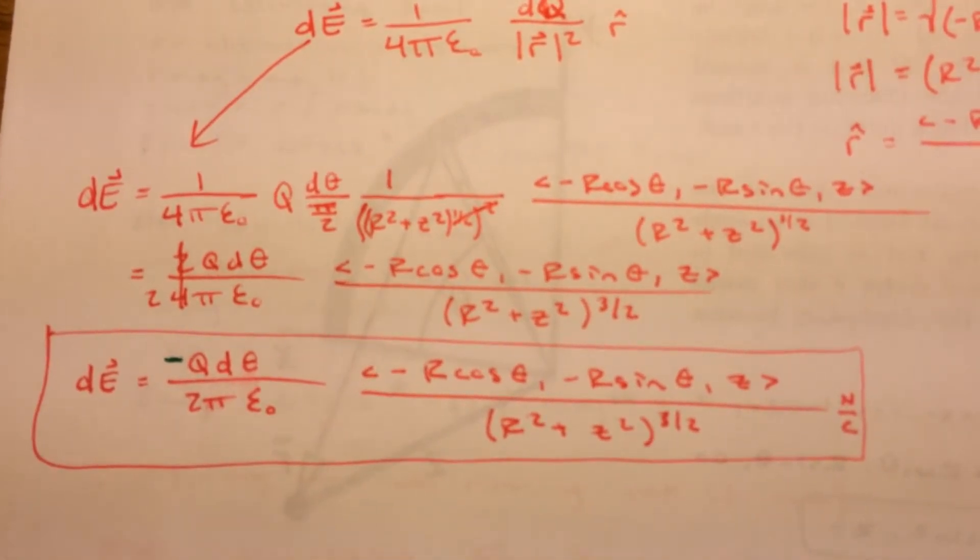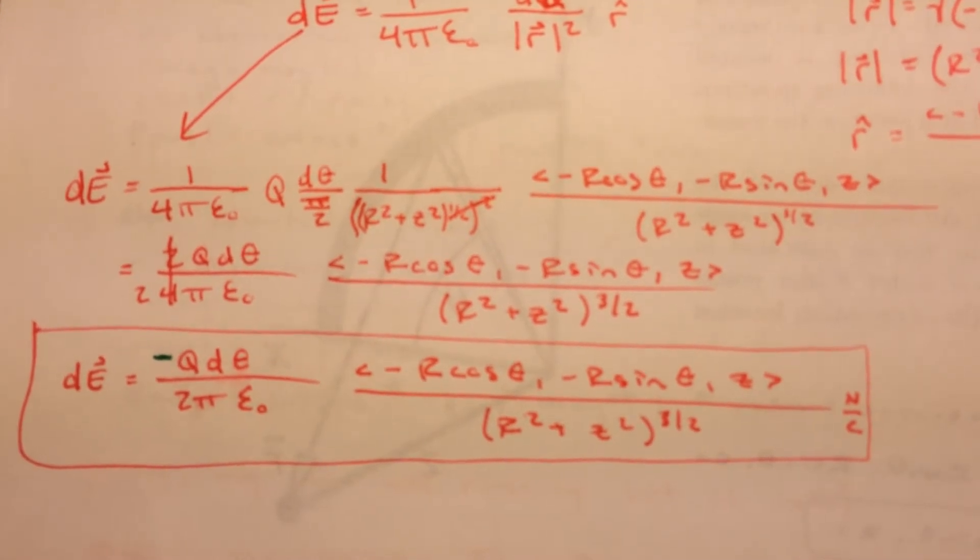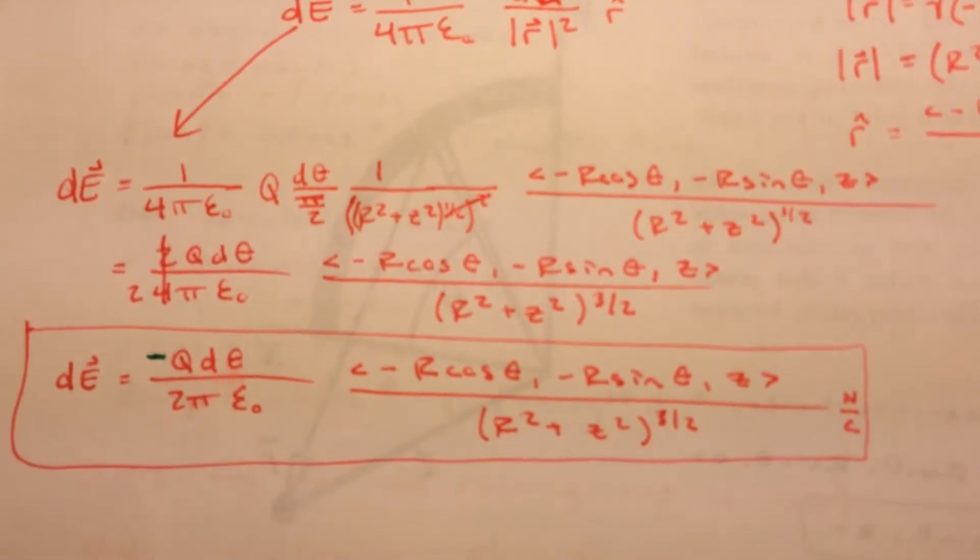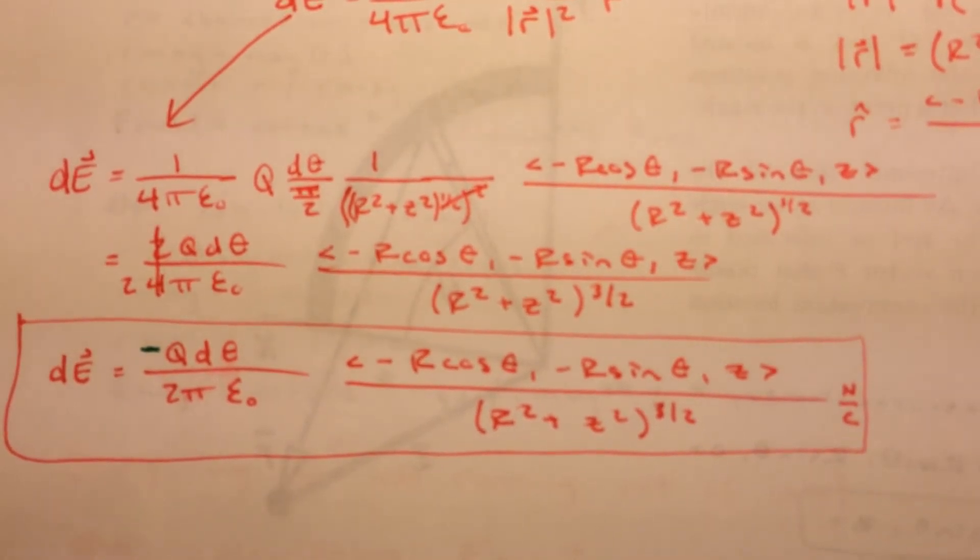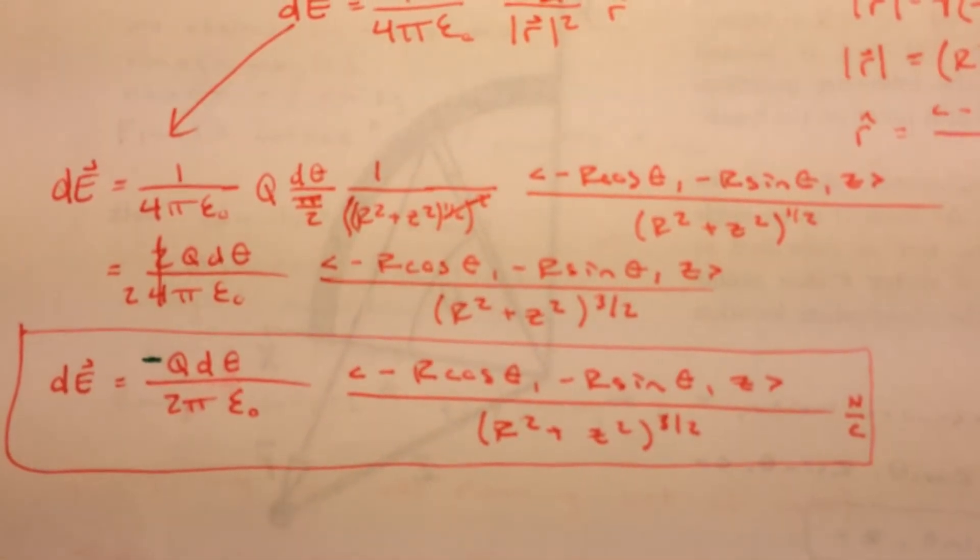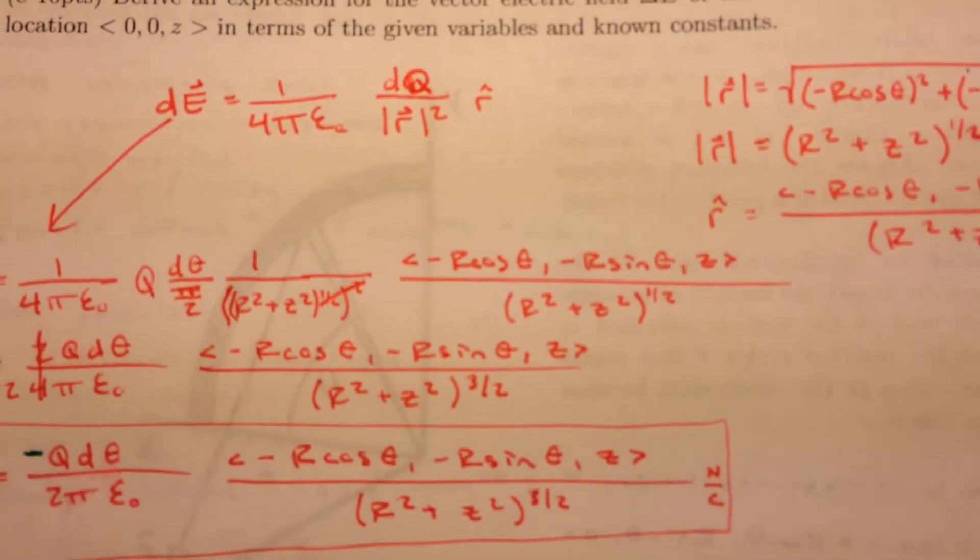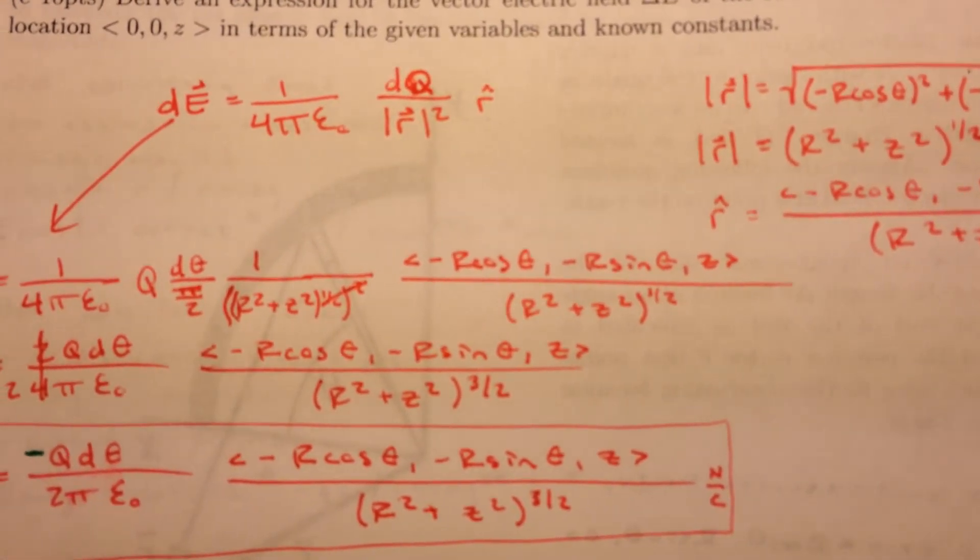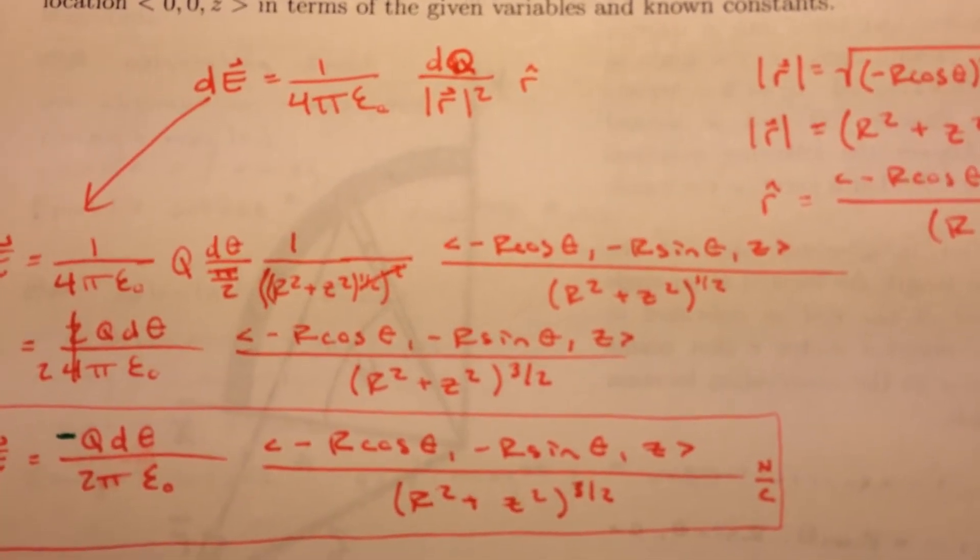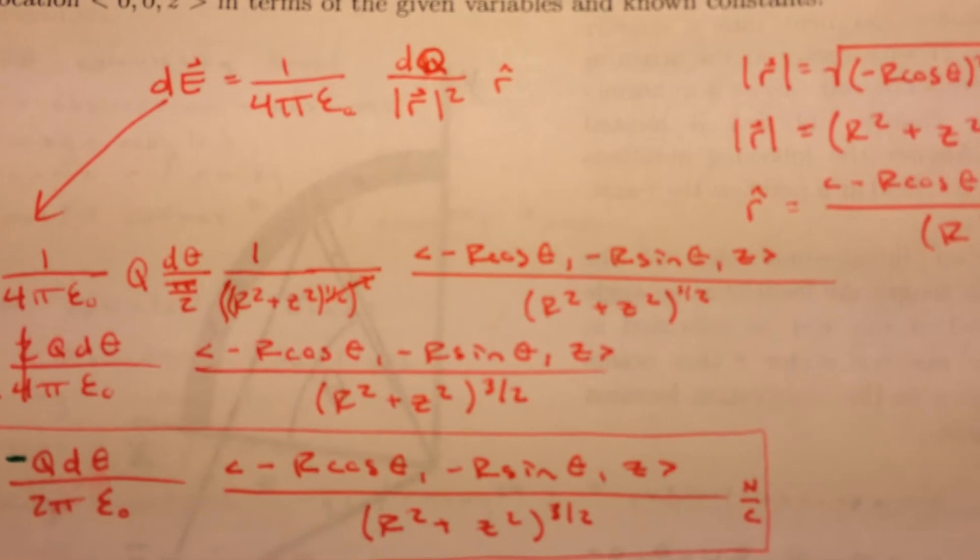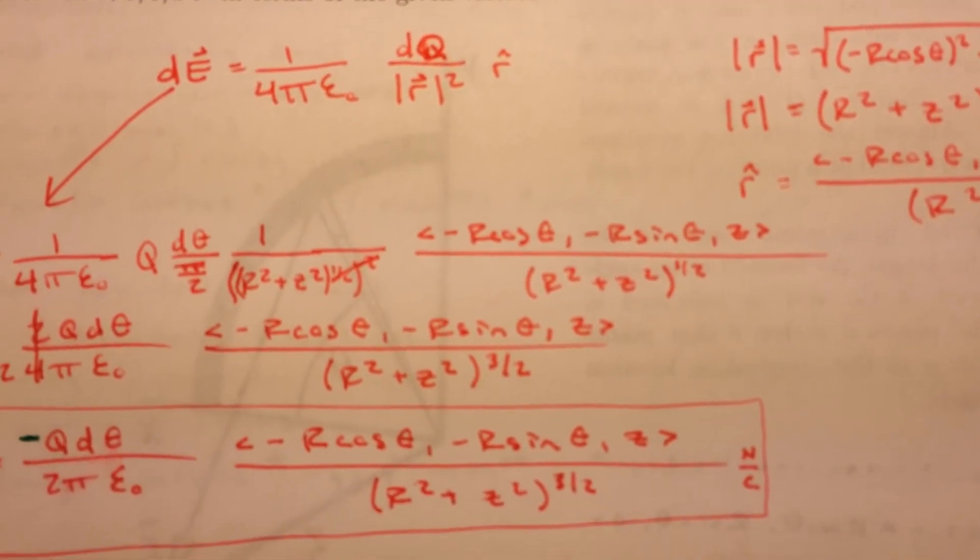We simplify that to q d theta over 2 pi epsilon naught. Because the pi over 2, bring a 2 on top, and then you cancel it out with a 4 to make a 2. And in this line, we've canceled out the square of the square root of r squared plus z squared. And we've combined the two bottoms of those fractions to make r squared plus z squared quantity to the 3 halves.